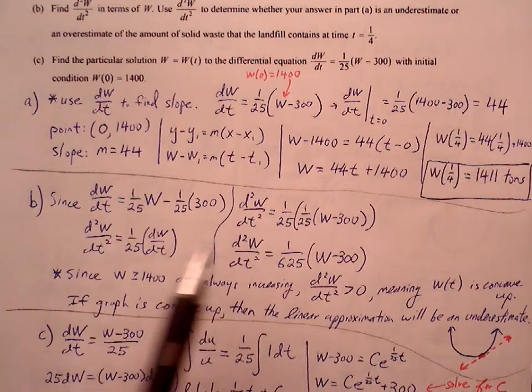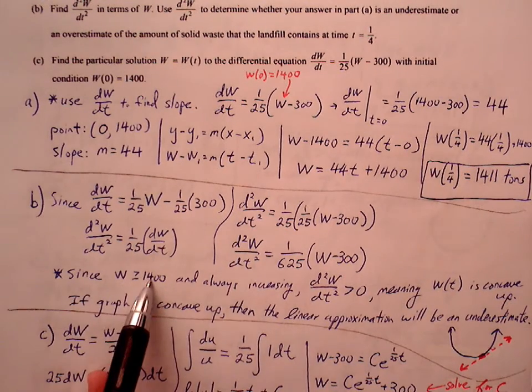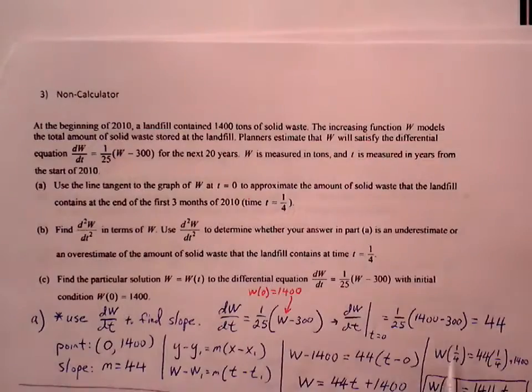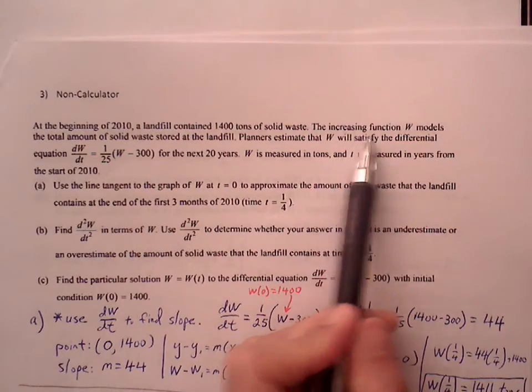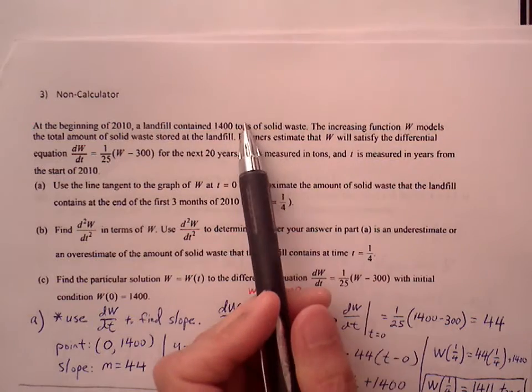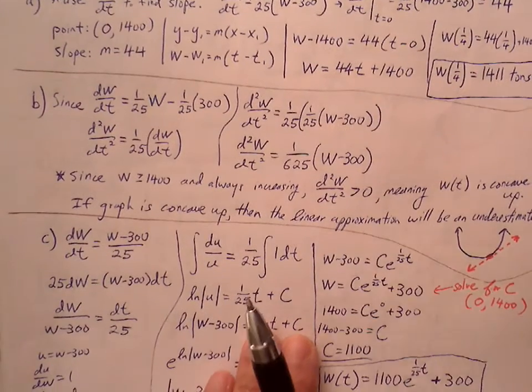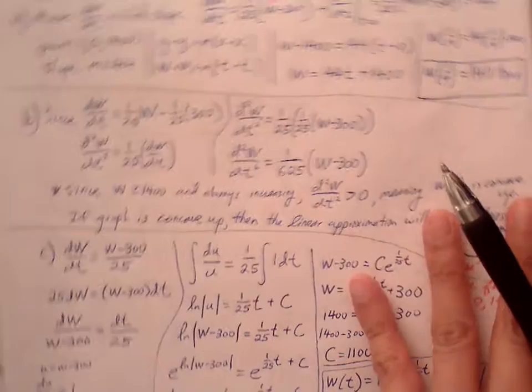So we know that W starts at 1400. And if we look at the beginning of the problem, it says this function is always increasing. So it starts at 1400 tons and it's just going to keep increasing. It's never going to decrease.